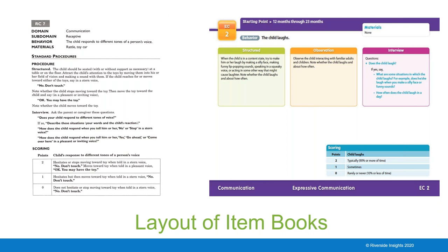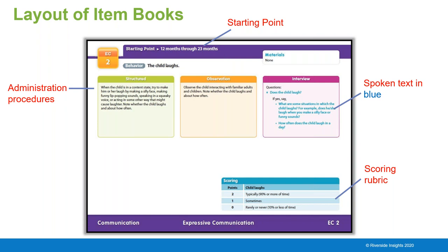You can see the bottom of the page shows the domain — communication — and the subdomain within that — expressive communication. At the top of the page you can see the three different administration options: structured, observation, or interview. We can score an item, for example 'the child laughs,' in any one of these three ways. Structured means we set up a situation to prompt the child; observation gathers data with familiar people; or we can get information from a caregiver or teacher.